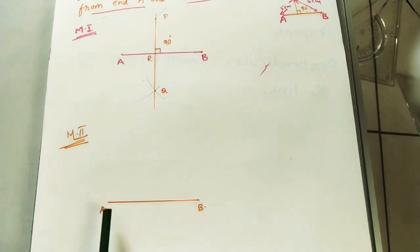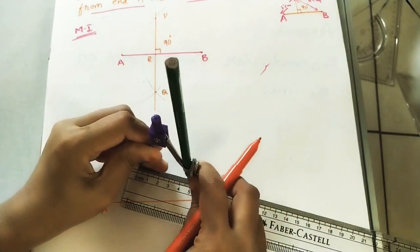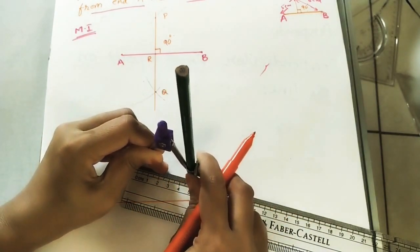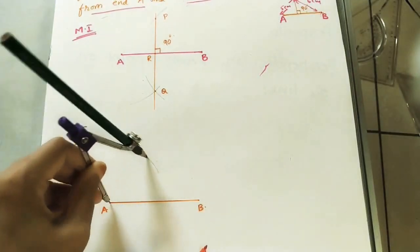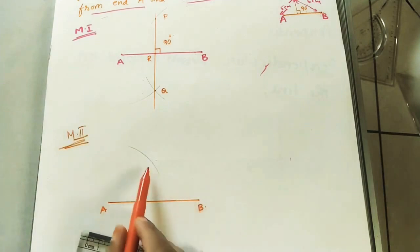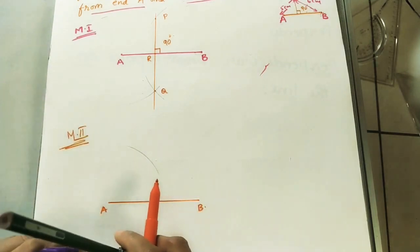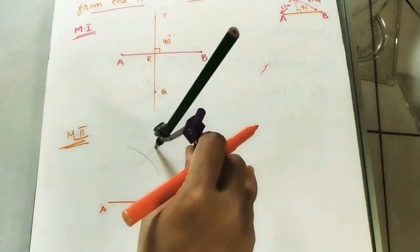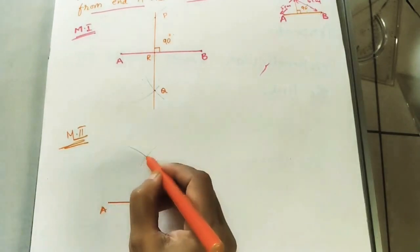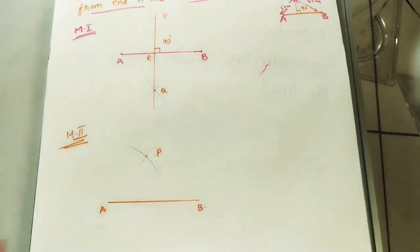From A, this point is 5 cm. Always use compass for marking the points. From A, it is 5 cm. Do an arc. From B, it is 6 cm. It has given in the question. From B, do an arc. We will get one intersection point. This point is P. From P, we have to draw the perpendicular line.